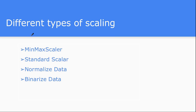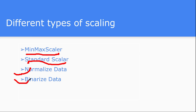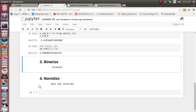Hi friends, this is the 16th video tutorial in the video lecture series on machine learning. In the last lecture we discussed the different types of scaling — the min-max scalar and the standard scalar. In this lecture we are going to see about the normalizer scalar and the binarized scalar, how you can normalize and binarize data with the help of the scikit-learn library.